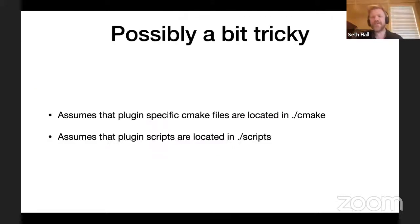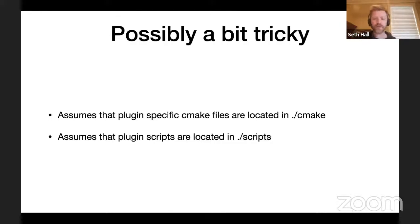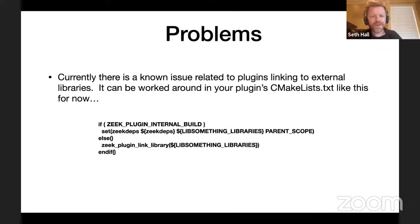The static plugin build makes two assumptions not explicitly enforced by the plugin API: that plugin-specific CMake files are located in the plugin's `cmake` directory, and that plugin scripts are located in the plugin's `scripts` directory. It's possible using ZKG to place these files elsewhere, but for built-in plugin compatibility those locations are required for now. Seth notes this is an area where Zeek and ZKG integration may be tightened in the future, though most existing plugins already follow this general pattern.